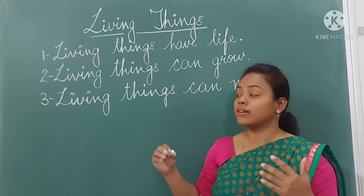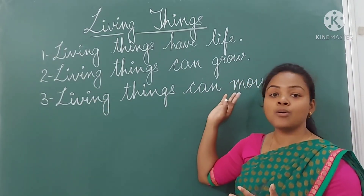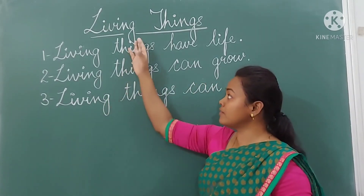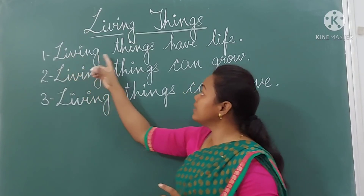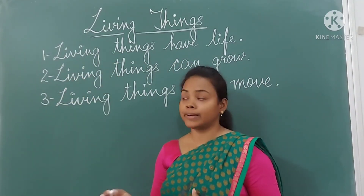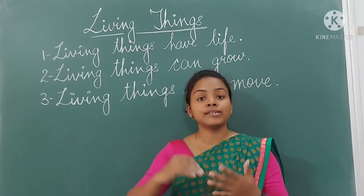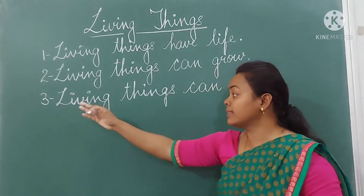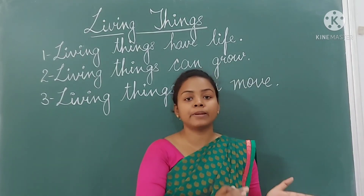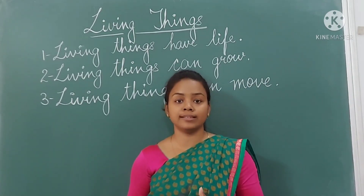Today we learnt three characteristics of living things. Number 1: living things have life — living things mein jaan hoti hai. Number 2: living things can grow — living things chote se bade ho jaate hai. Number 3: living things can move — living things ek place se dousari place tak move kar sakte hai.